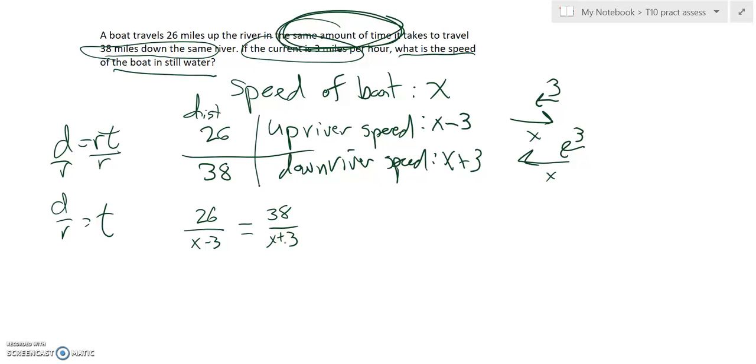And then now all I have to do is solve that. So I'm going to multiply both sides by common denominator, X minus 3 times X plus 3. So here that divides out. So I've got 38 times X minus 3. Over here that divides out. So I've got 26 times X plus 3.